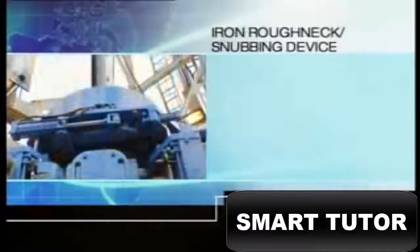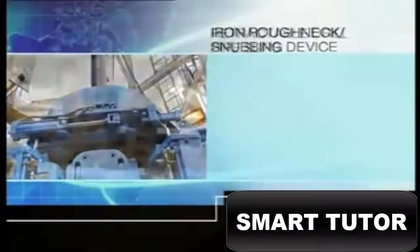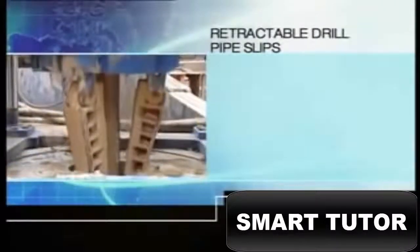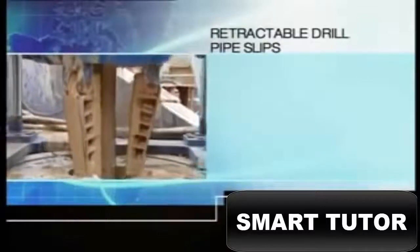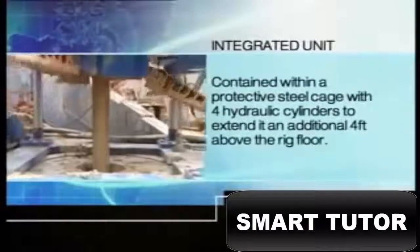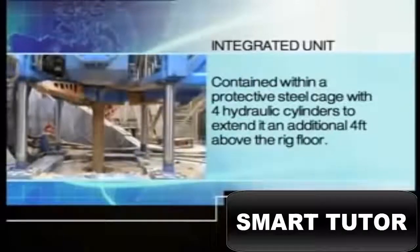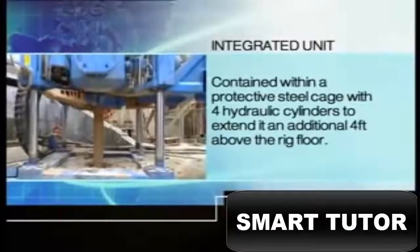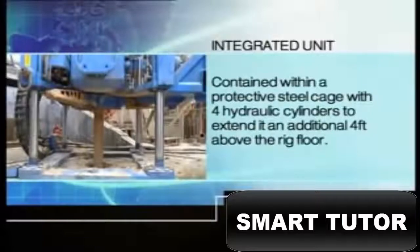An iron roughneck snubbing device on top and retractable drill pipe slips attached to the bottom. The integrated unit is contained within a protective steel cage with four hydraulic cylinders, to extend it an additional 4 feet above the rig floor.